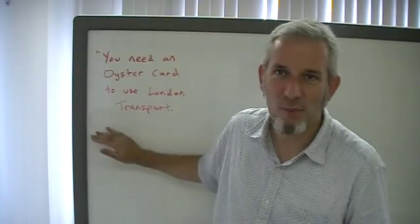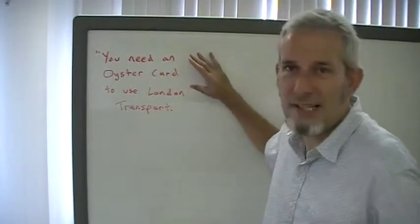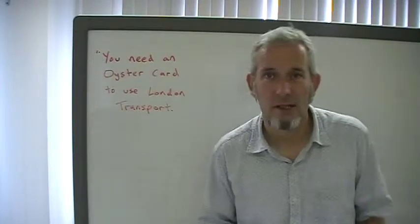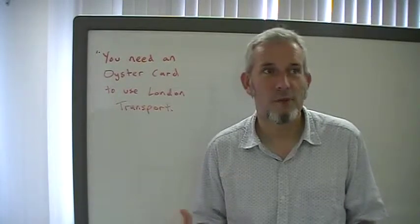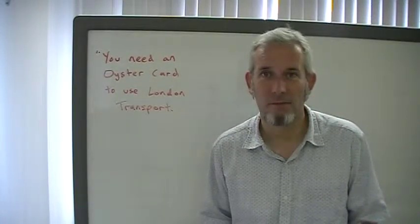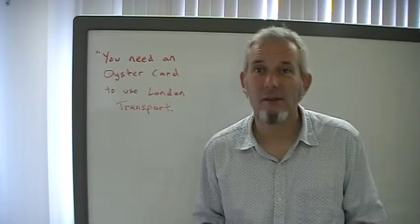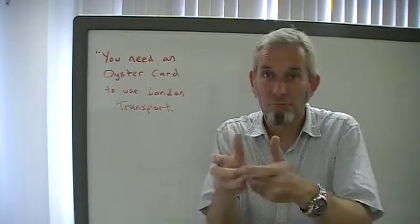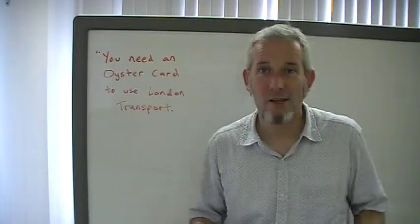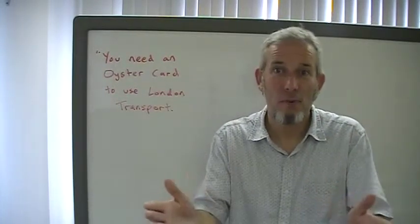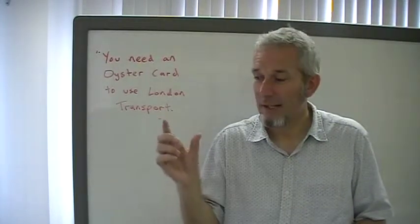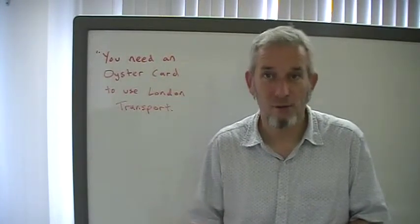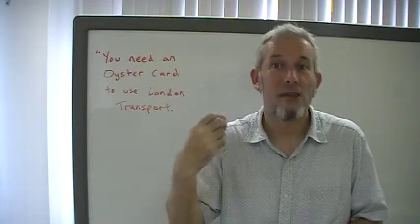This example has been next to me on the board since I started talking. One of the sentences I gave people was, you need an Oyster card to use London Transport. I don't think you'll be surprised to know that most people couldn't catch that the first time. And even after I slowed down, you'll need an Oyster card to use London Transport. Even if people know Oyster, they don't know Oyster card. Well, that's not their problem. An Oyster card is a card that you prepay and then use on the London subway system, the underground or the tube, you use on the subway and the bus in London.